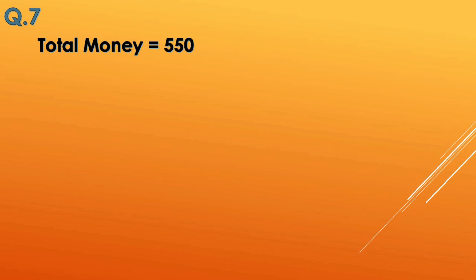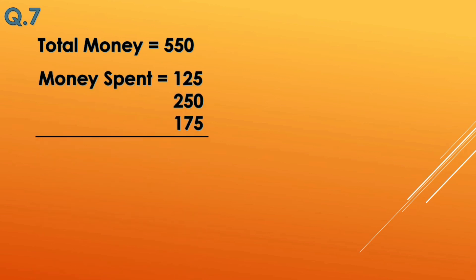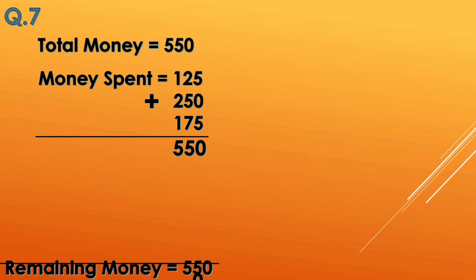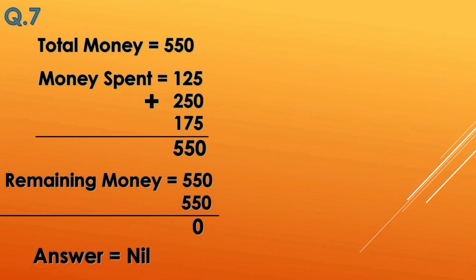In question 7, the total money was 550 rupees and she spent 125, 250, and 175 rupees — totaling 550 rupees. Since she spent all 550 rupees, she has no money left. The answer is nil.